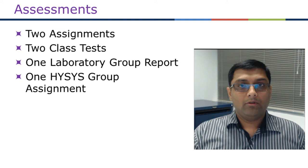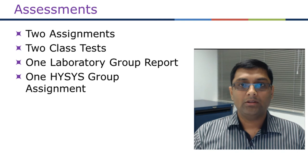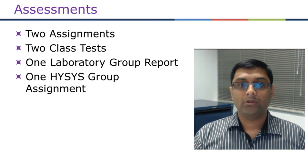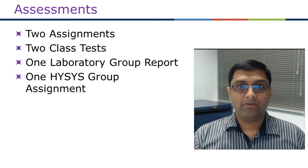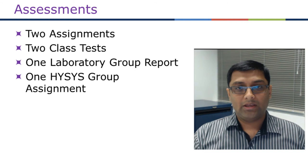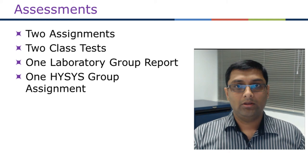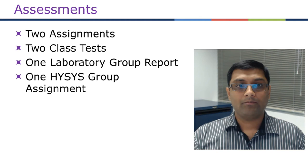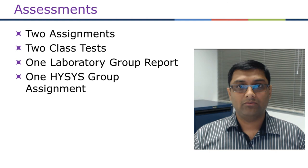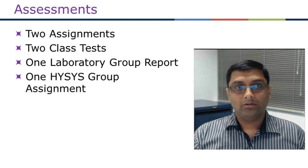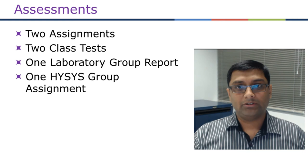The assessment is 40% internal and 60% exam. The internal assessment consists of two hand-calculation assignments, two class tests in weeks 7 and 11, one group laboratory report (you choose only one of the two labs, with the report due two weeks after completing it), and one computer-based simulation assignment done on HISIS. The simulation assignment runs from the second half of the semester, with the report due at the end of week 12.